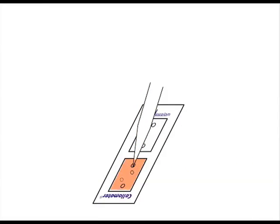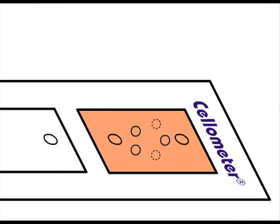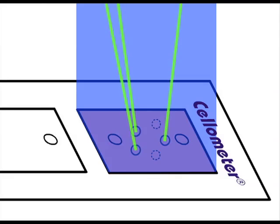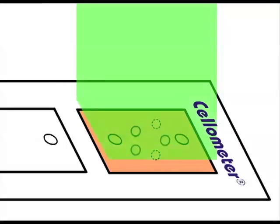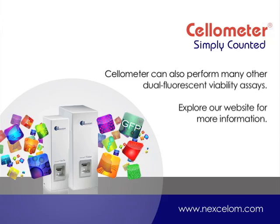To perform the FDA/PI assay, load stained cells into a counting chamber and insert the chamber into the cellometer. The cellometer automatically performs cell image acquisition and imaging analysis. Typical assay time is less than 60 seconds. The cellometer can also perform many other dual-fluorescent viability assays. Explore our website at Nexlam.com for more information.